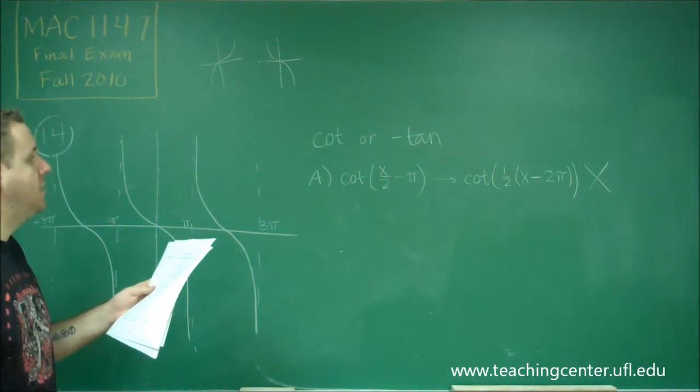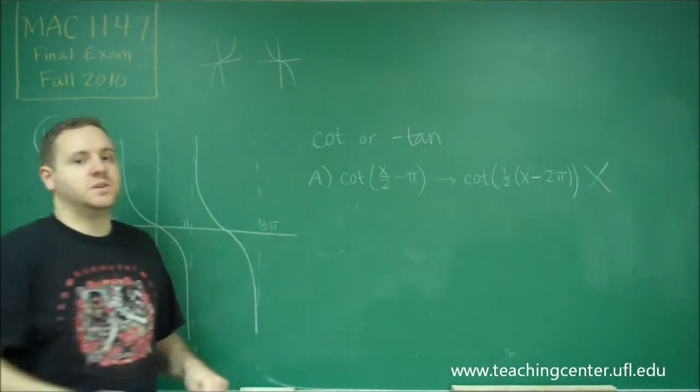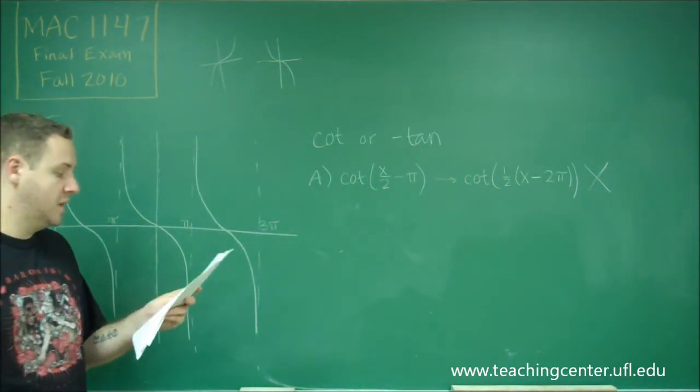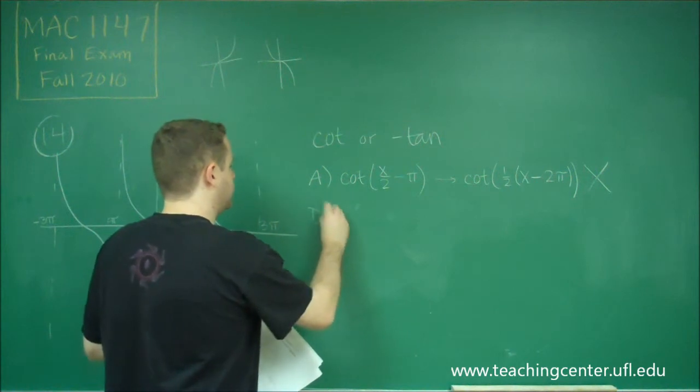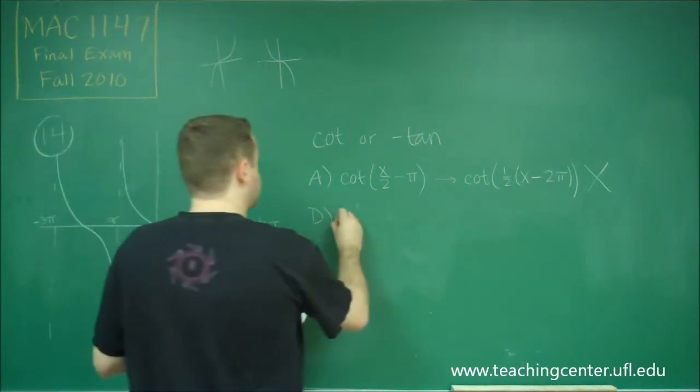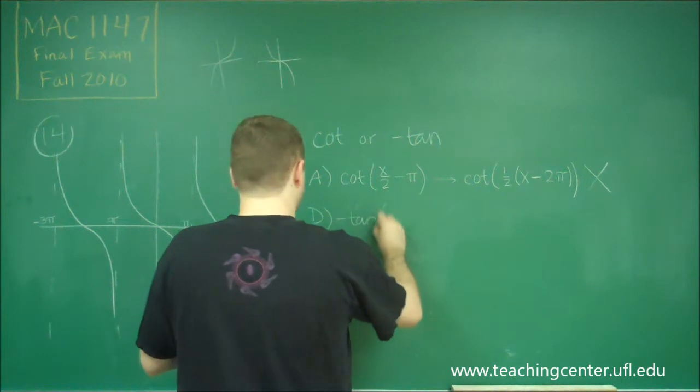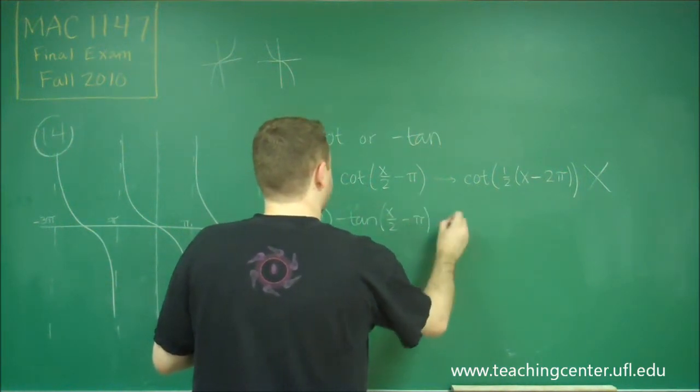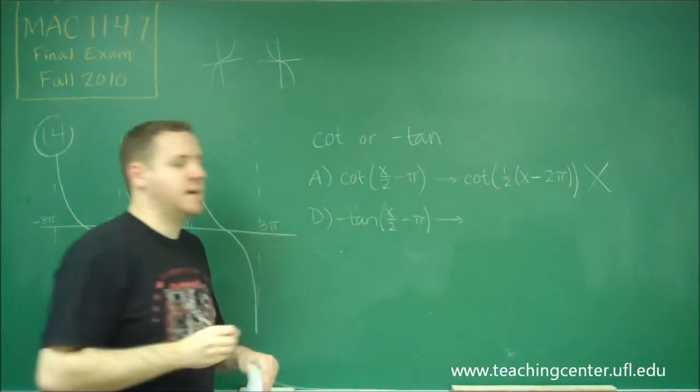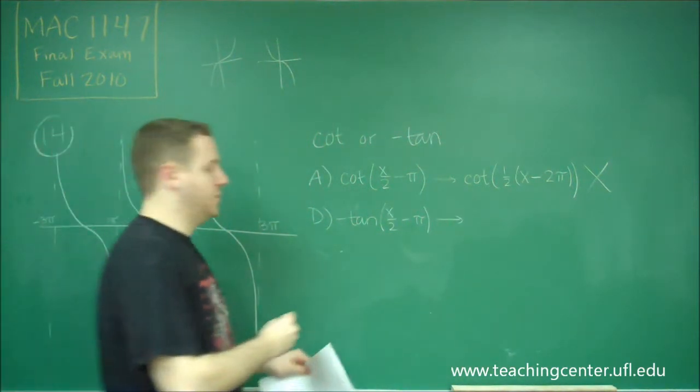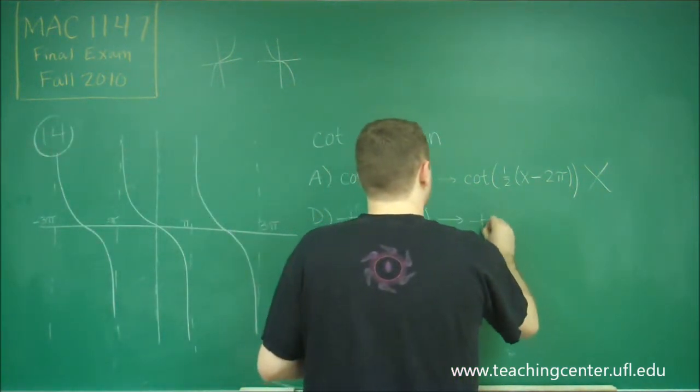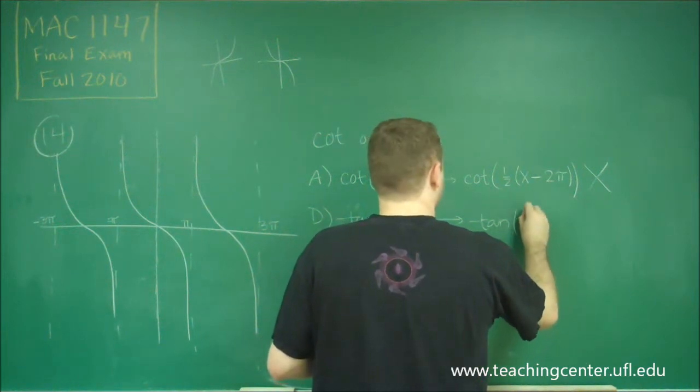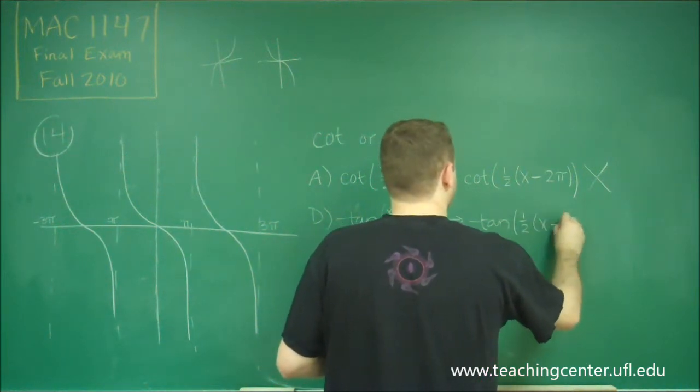We already eliminated B and C by just knowing that it had to be cotangent or negative tangent. So let's look at D. D says negative tangent of x/2 minus π. Again, let's put that in our standard form by factoring out the coefficient on the x. So we have negative tangent of 1/2 times x minus 2π.